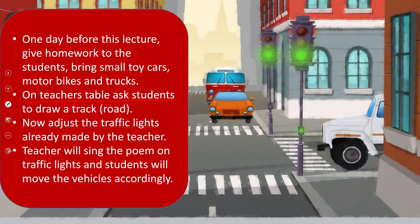Children need to draw a track on the teacher's table using chalk. If they don't know how, the teacher will help. Then, on a chart paper, draw traffic lights. The teacher will help the children make these. Children will then practice: if the traffic light is red, what happens? If yellow, what happens? And when it becomes green, what happens?